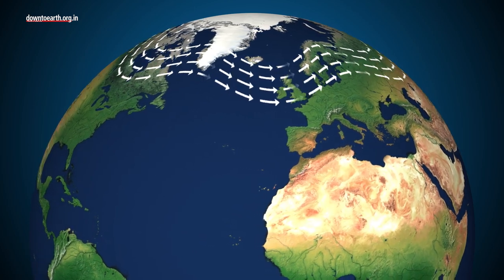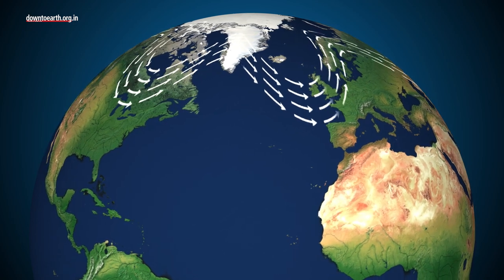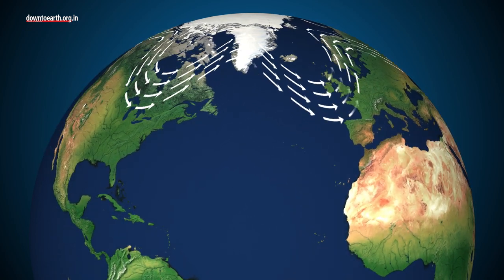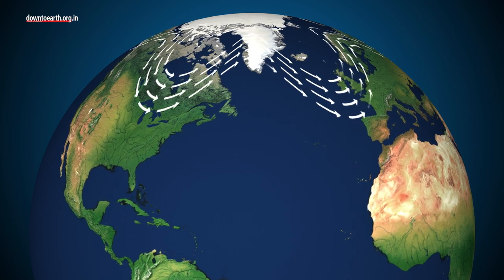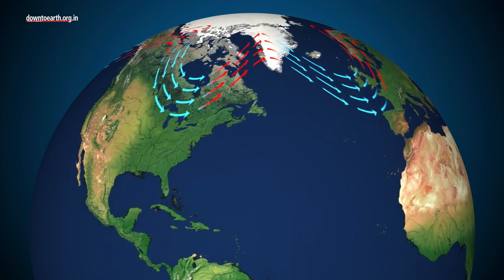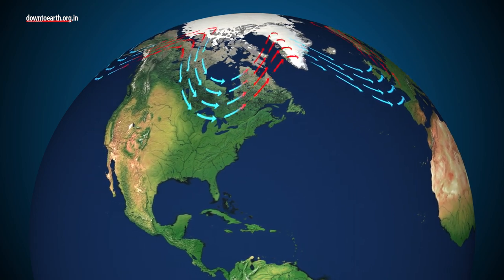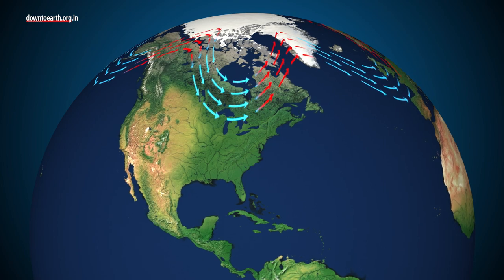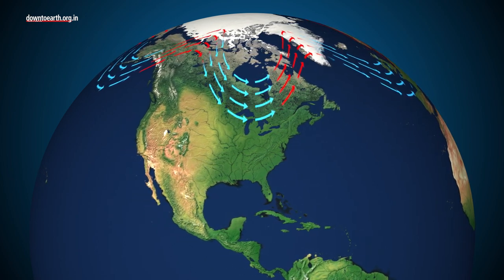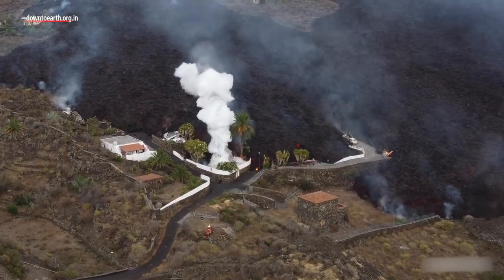Atmospheric Rossby waves are high-altitude winds in the mid-latitudes. When the Arctic jet stream becomes more wavy and flows into lower latitudes, that meandering is referred to as Rossby waves. When they swing up, they transfer heat from the tropics to the poles. And when they swing down, they carry cold air towards the tropics to maintain some balance in the atmosphere. Any anomaly in Rossby waves can cause disasters in seemingly disconnected parts of the Earth.